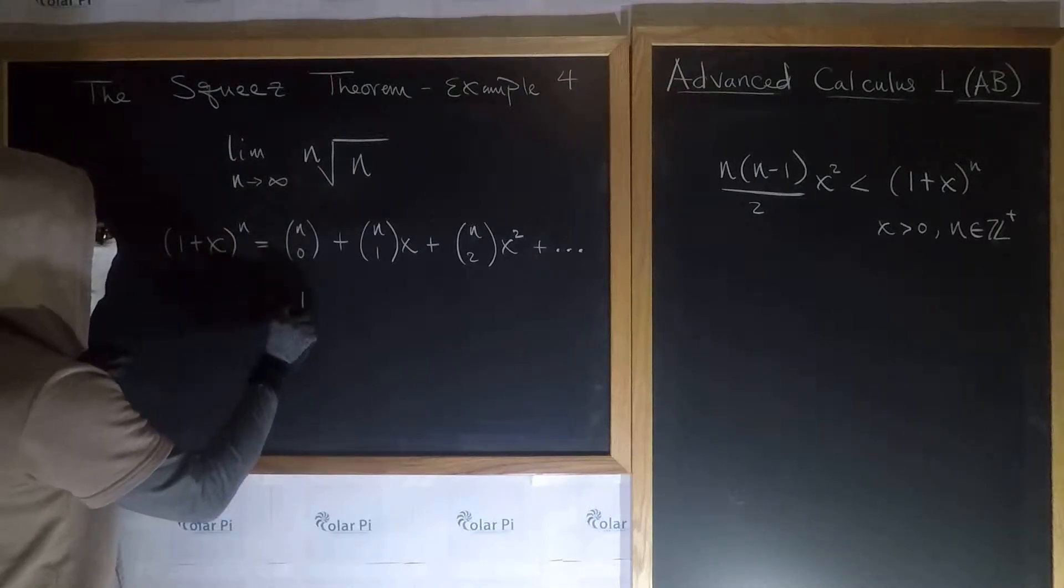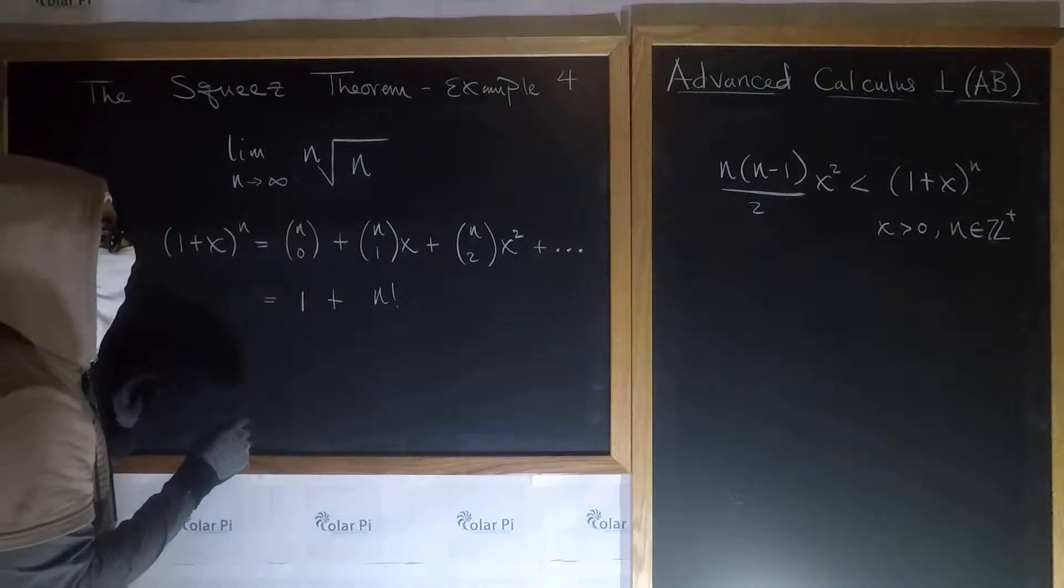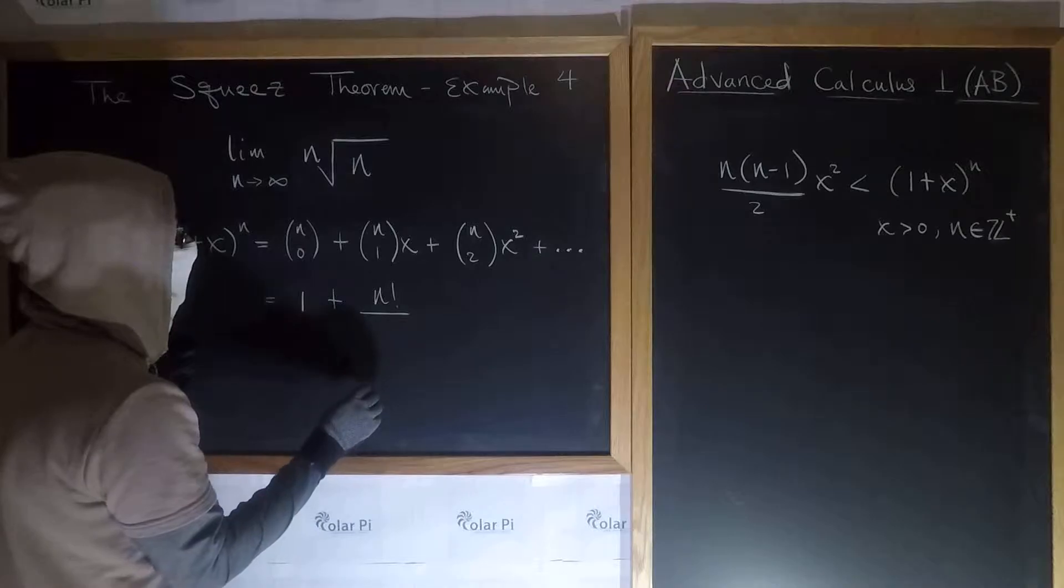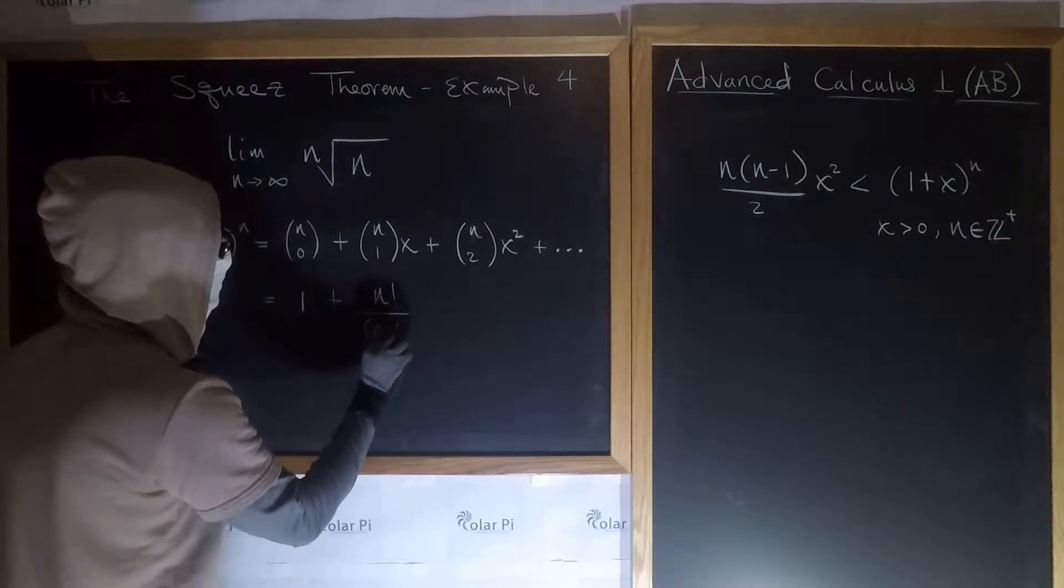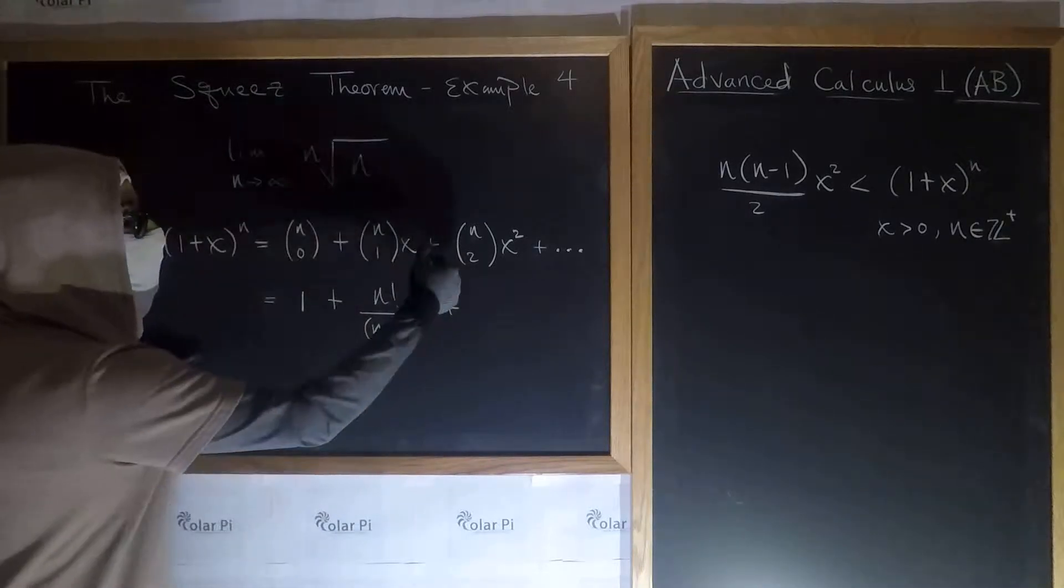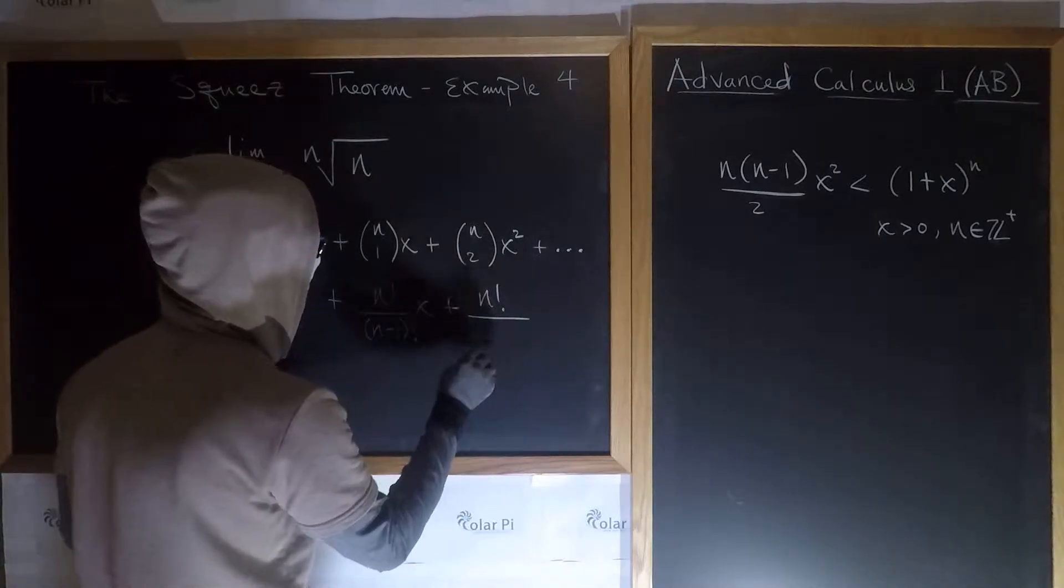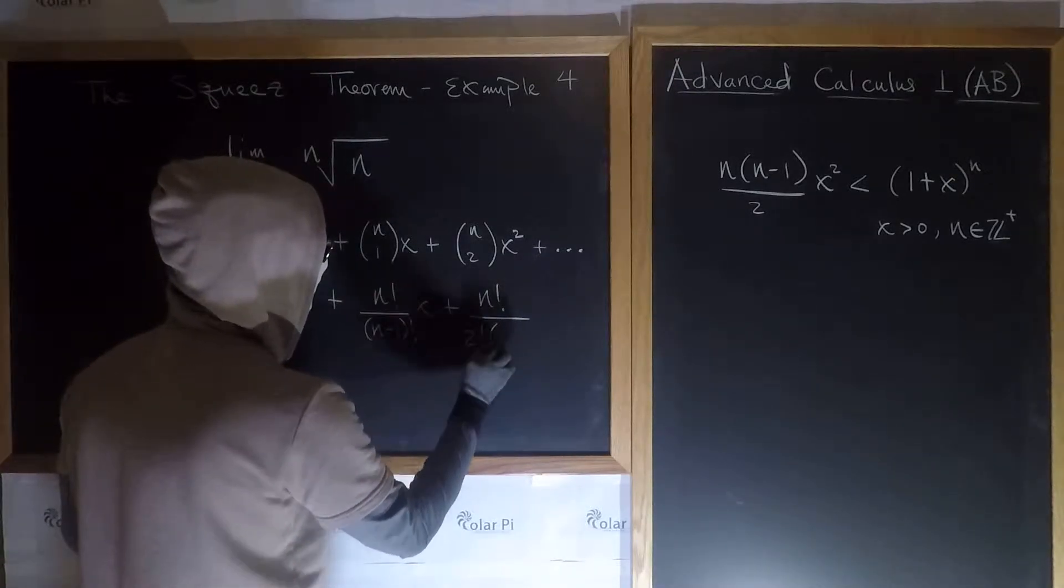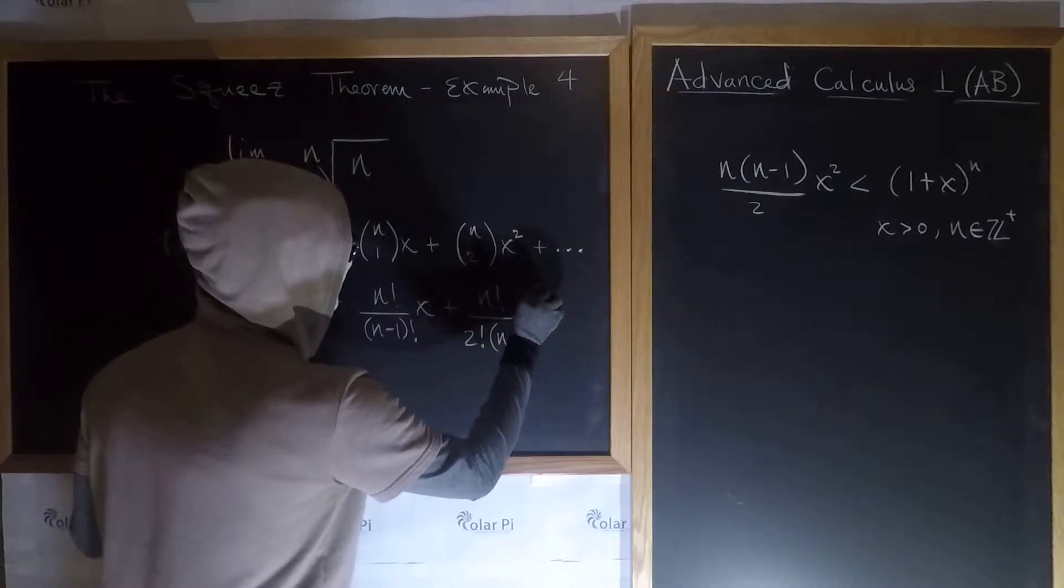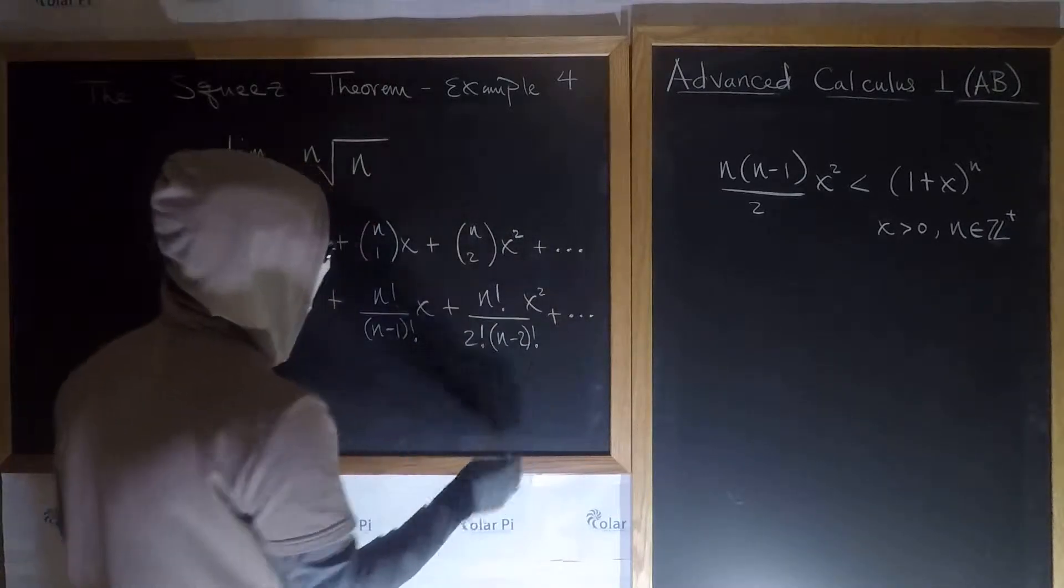Now, what is this, what I've written, just what I've written, the terms I've written? Well, n choose 0 is 1, and then plus n choose 1 is n factorial divided by 1 factorial, which is 1, and then 1 factorial times n minus 1 factorial in the denominator, so the n minus 1 factorial is worth showing. And then plus what's n choose 2? It's n factorial, right, divided by 2 factorial and then n minus 2 factorial, and then of course we have this times x squared, and then plus dot dot dot more terms to show, right?